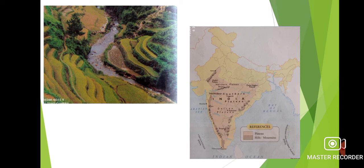Now another landform — we have completed the Himalayan region and we are going to see the Peninsular Plateau. You can see the image in a slight brown and pinkish color. This region is the Peninsular Plateau, located to the south of the Northern Plains.